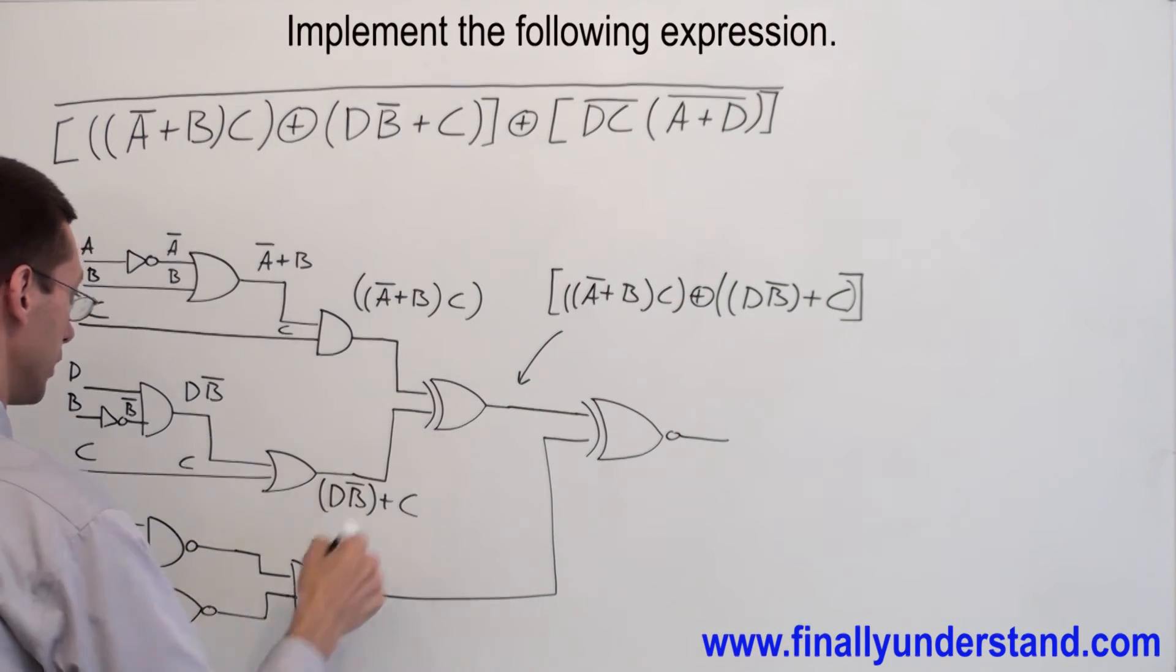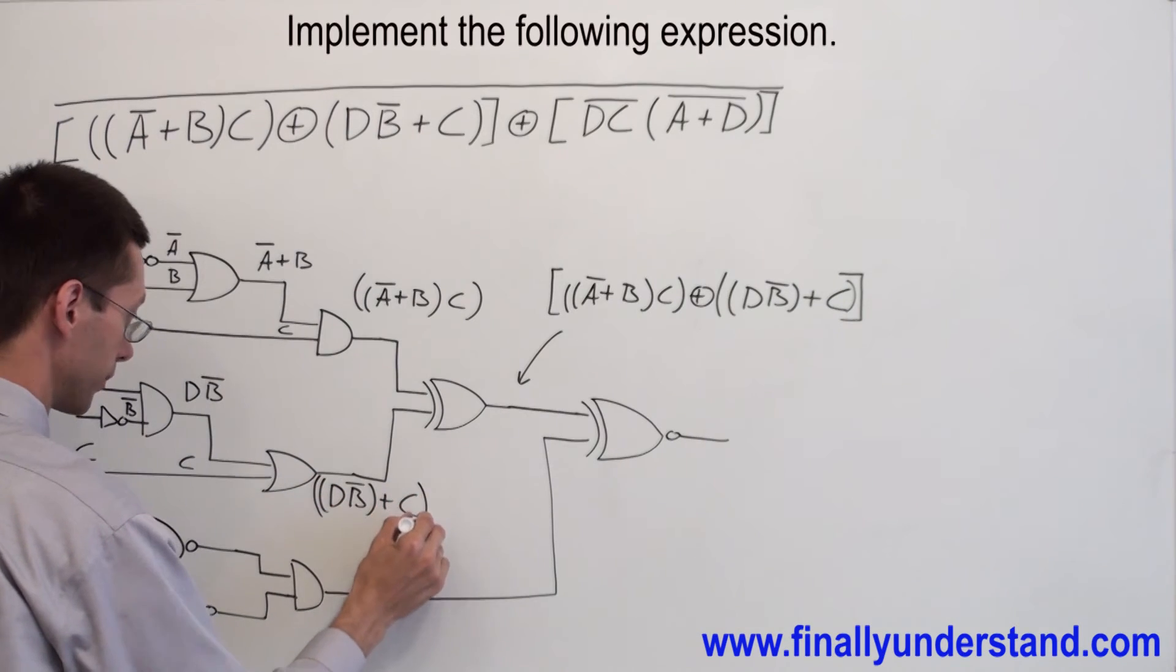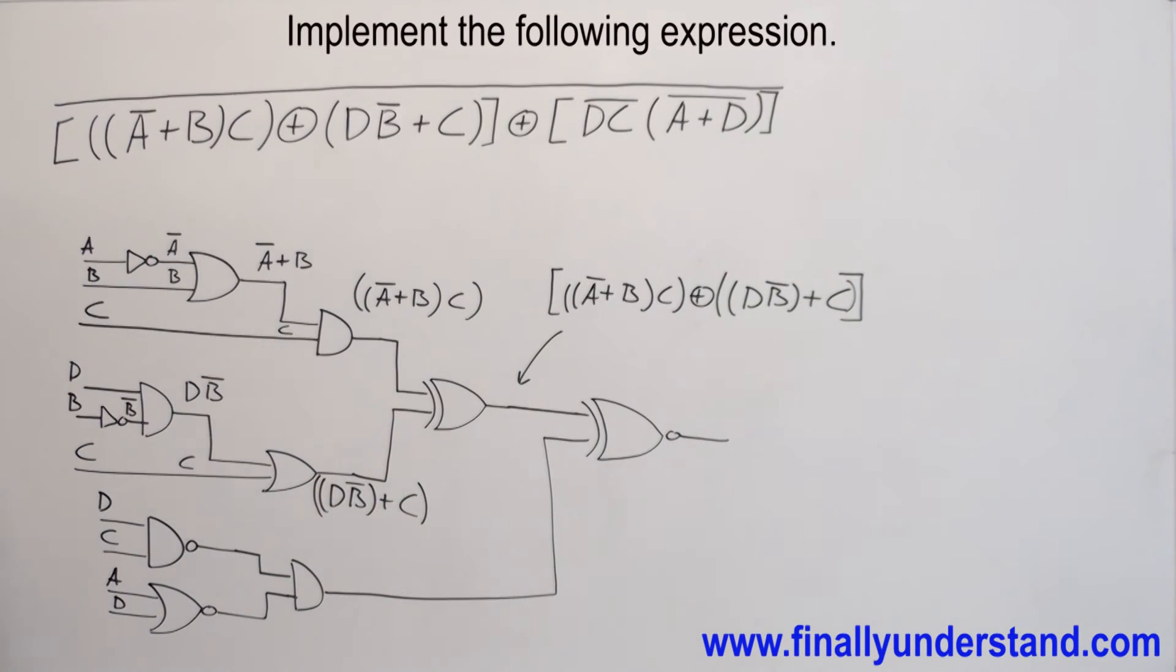Next, let's take a look at the second part of the circuit. I have a NAND gate, so this is D, C bar, and this is a NOR gate, which is A NOR D.